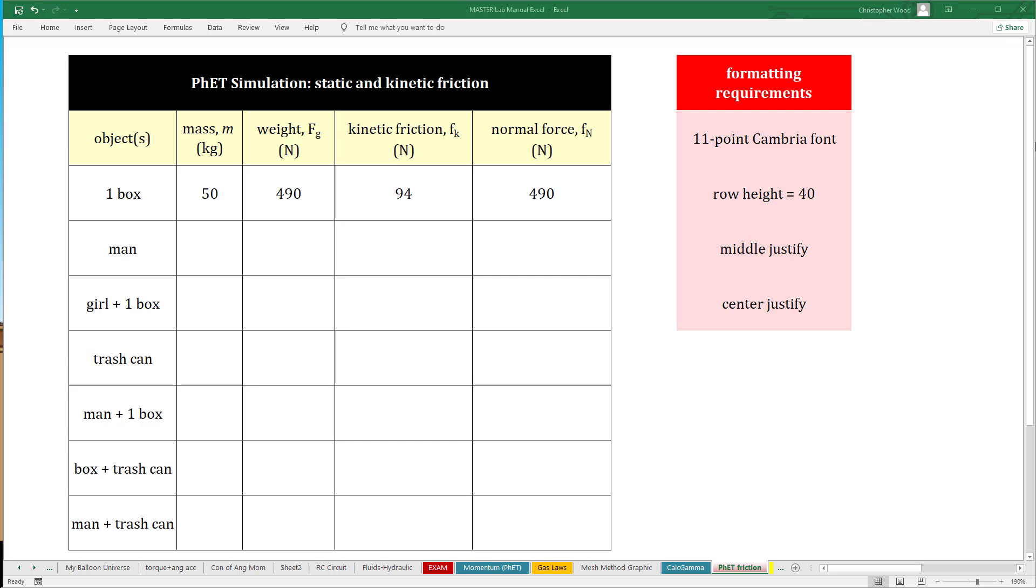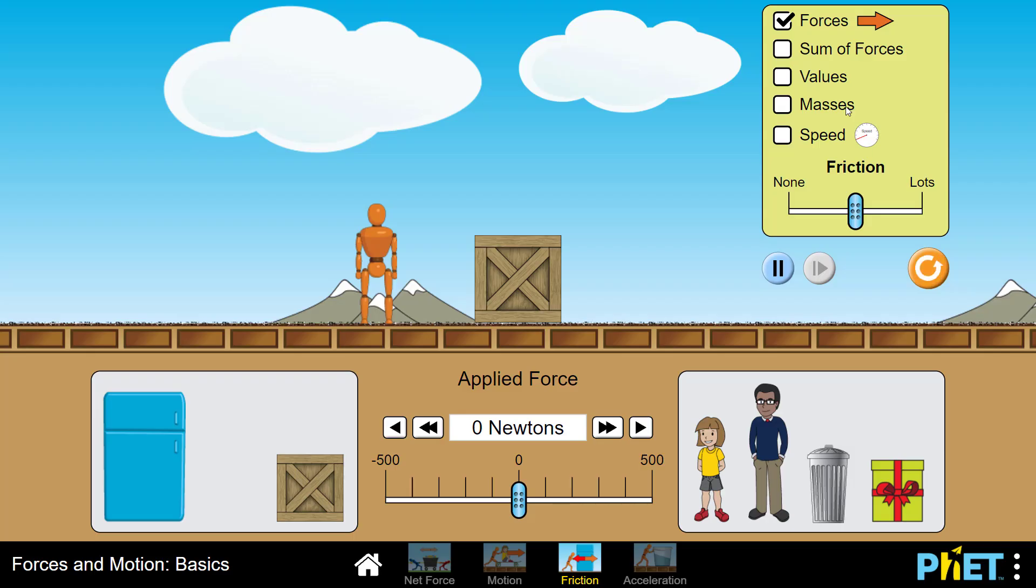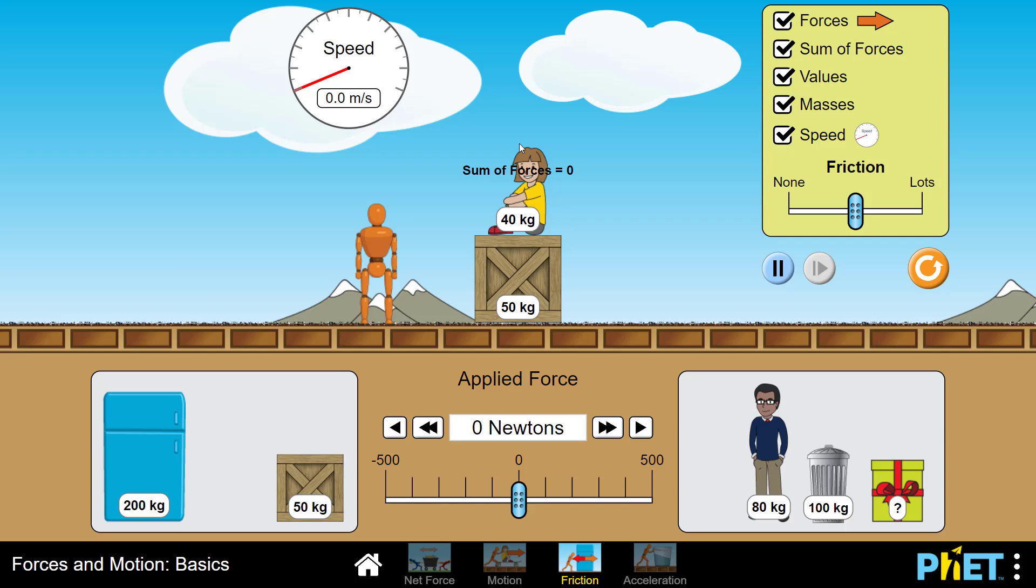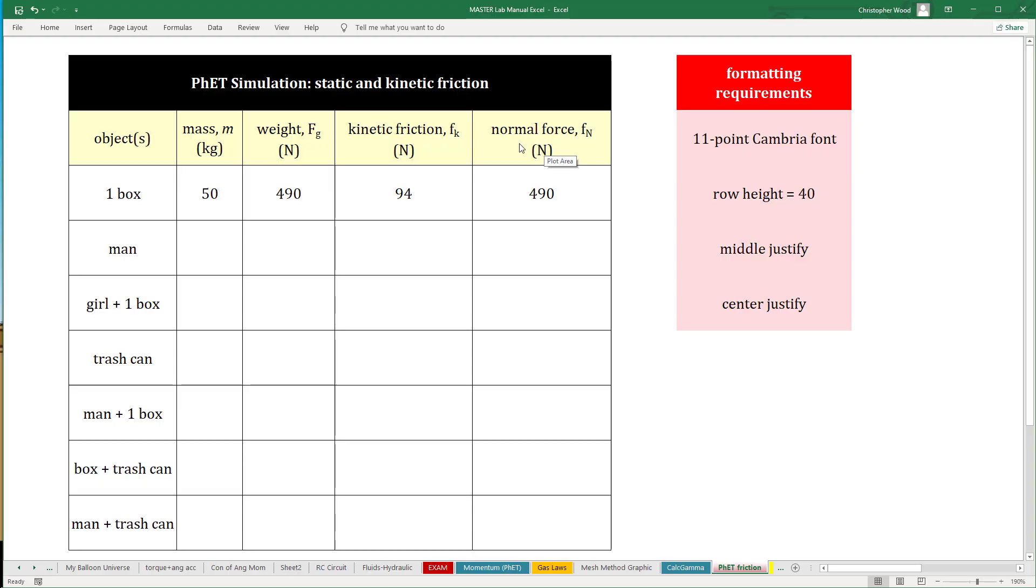The next trial is GIRL plus one box. Click reset, turn on all of these options, and on top of the crate, place the GIRL. So the total mass now is 50 plus 40, or 90 kilograms. So that's it.